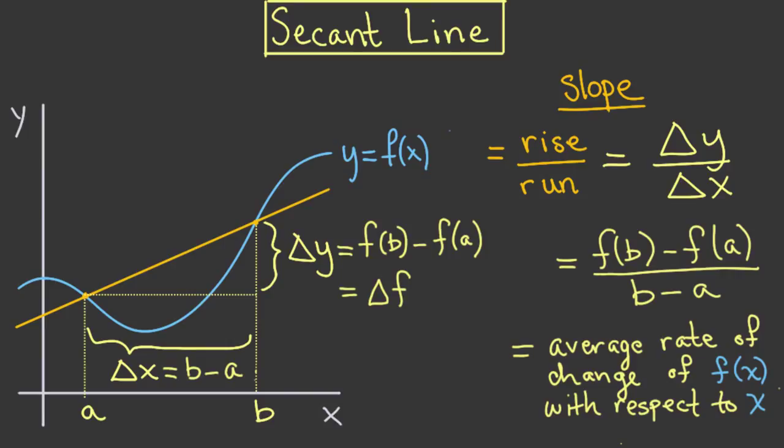So what have we just done? We've seen that the slope of the secant line is measuring the average rate of change of this function f. Pretty cool, huh?